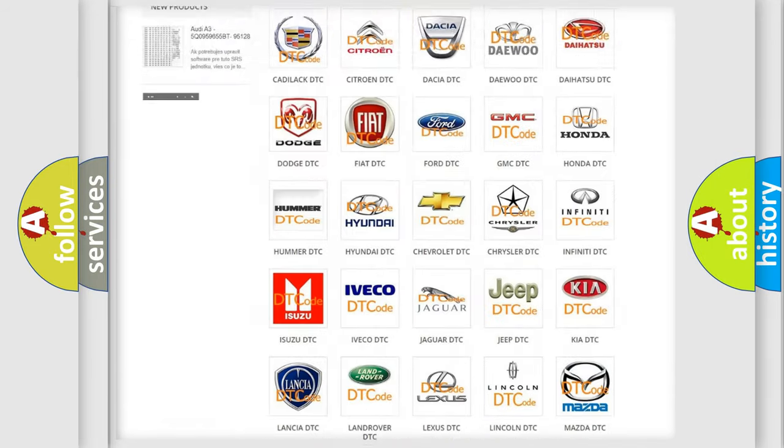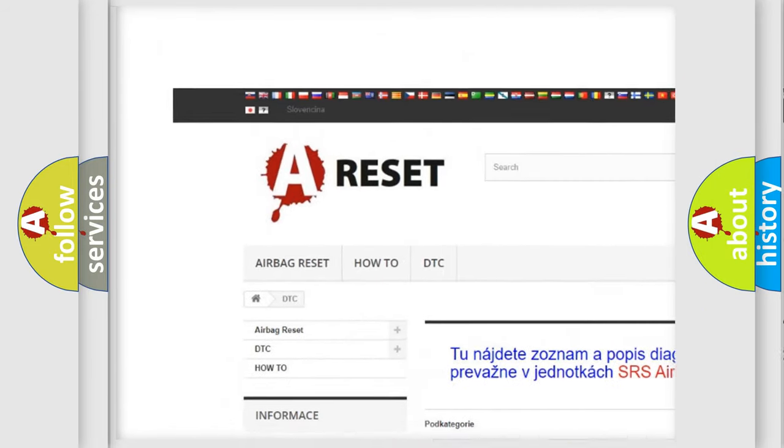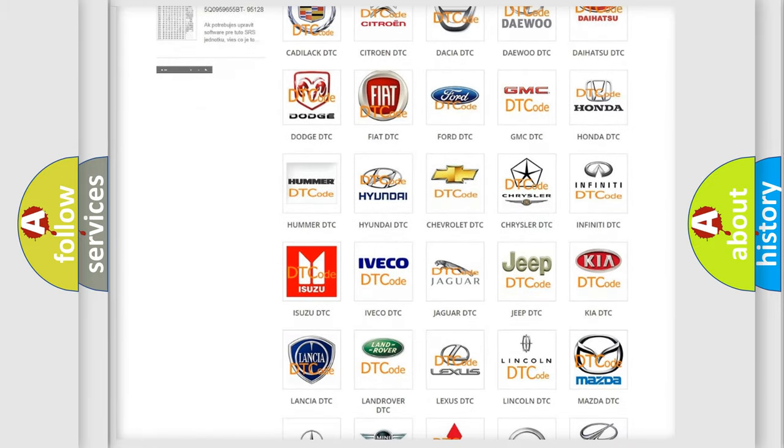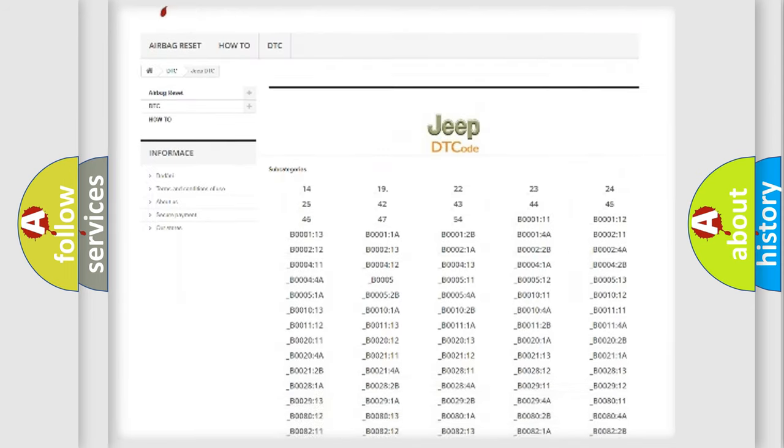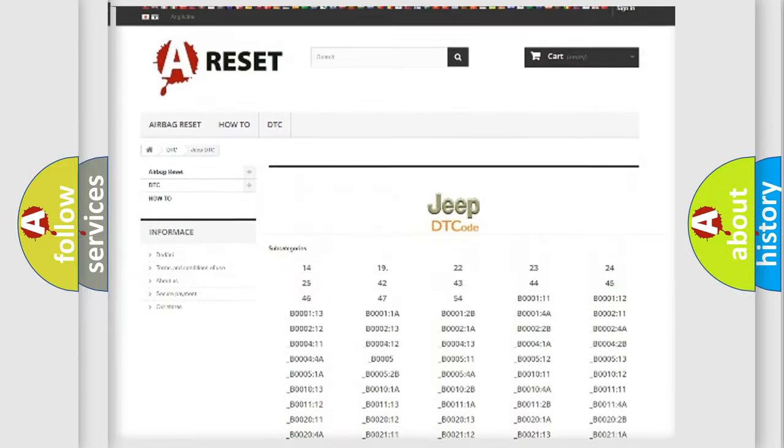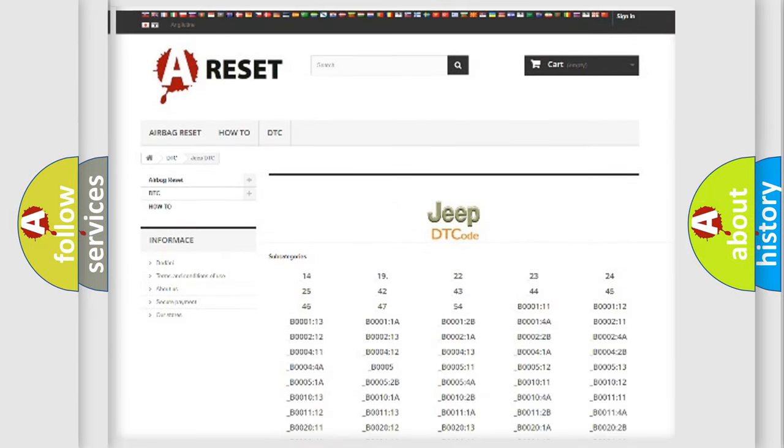Our website airbagreset.sk produces useful videos for you. You do not have to go through the OBD2 protocol anymore to know how to troubleshoot any car breakdown. You will find all the diagnostic codes that can be diagnosed in Jeep vehicles, and also many other useful things.